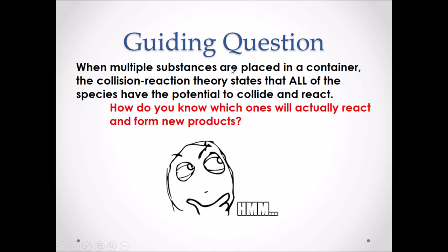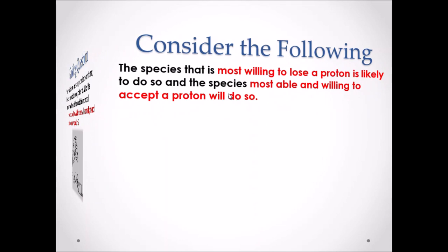Our guiding question for today's lesson: when multiple substances are placed in a container, the collision reaction theory states that all of the species have the potential to collide and react. How do we know which ones will actually react and form new products?